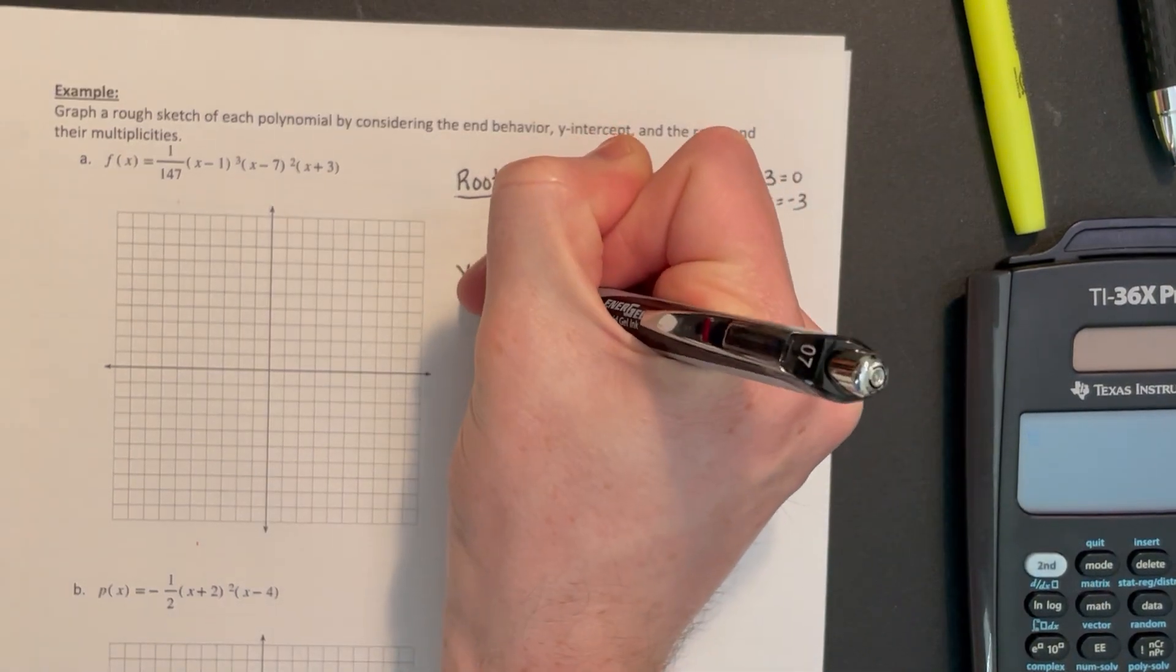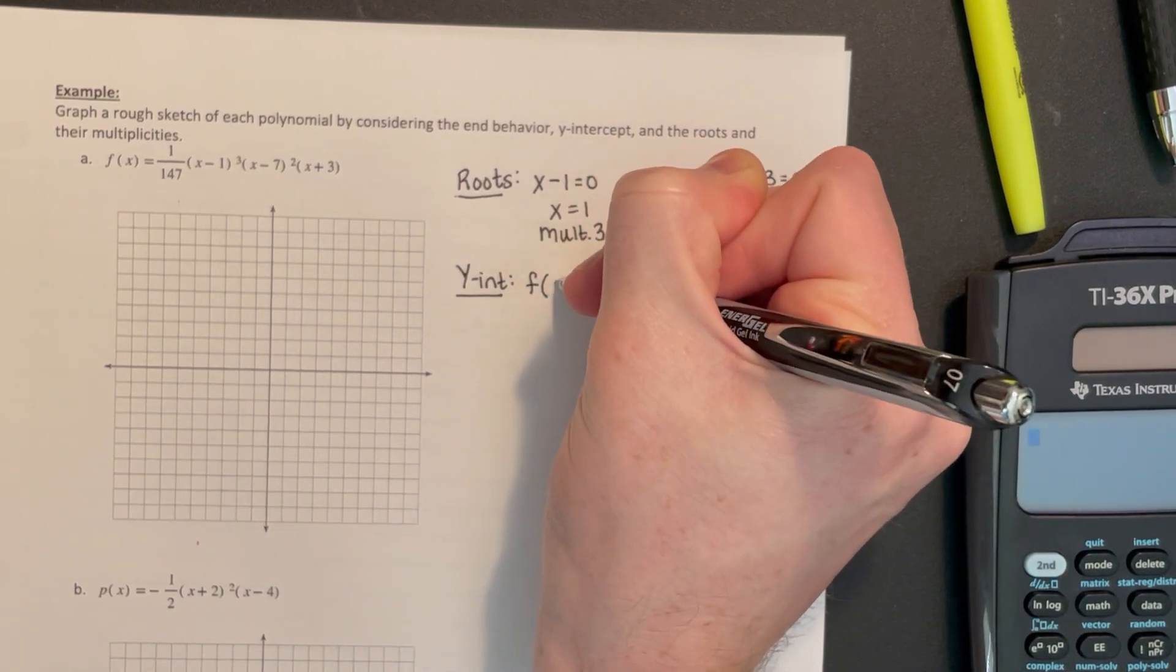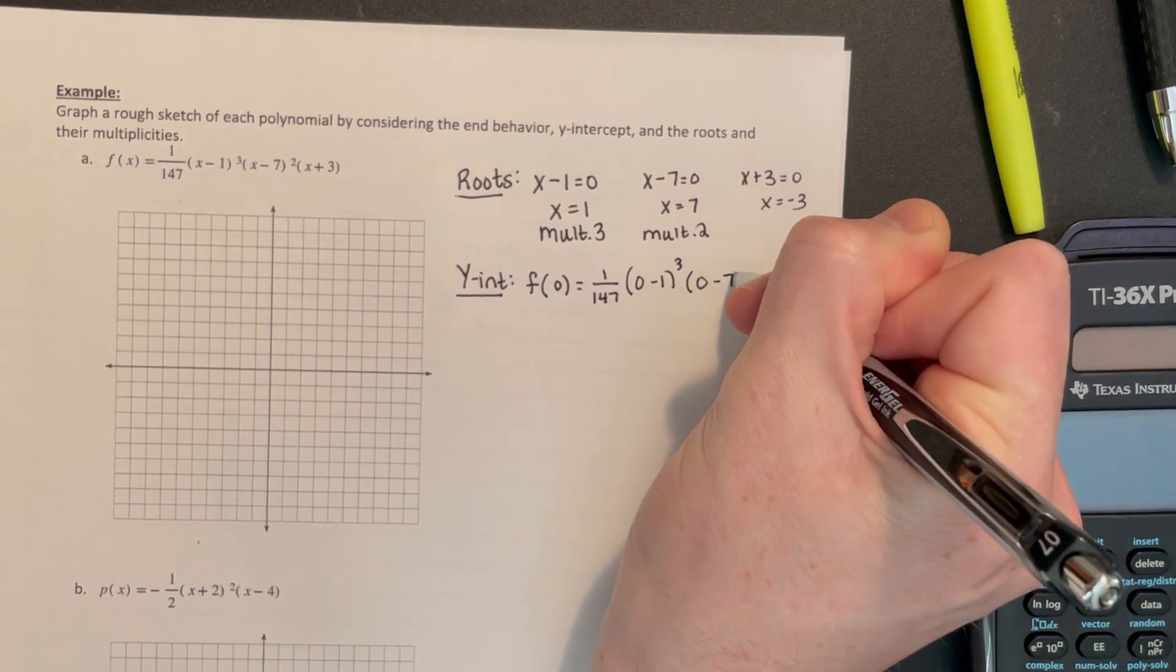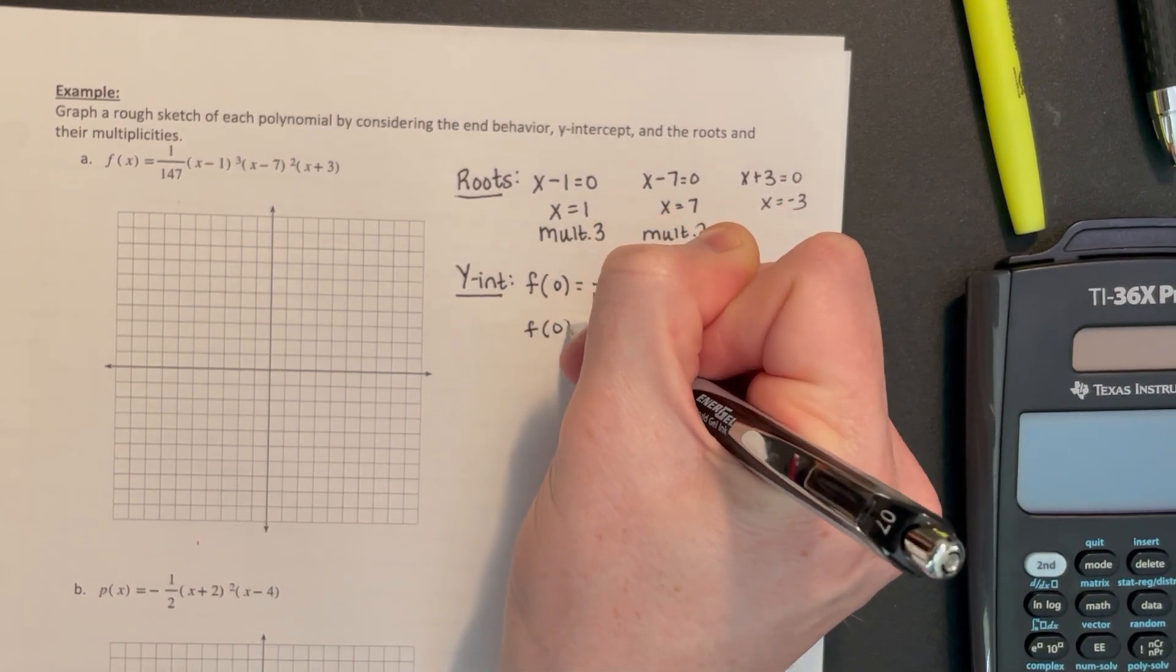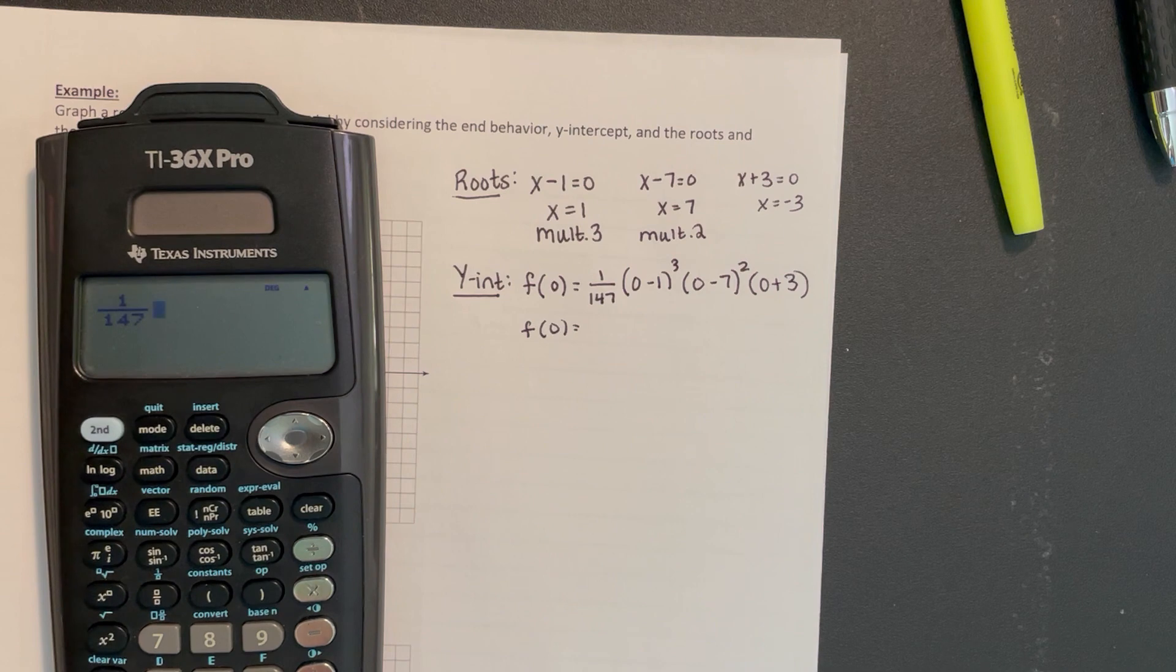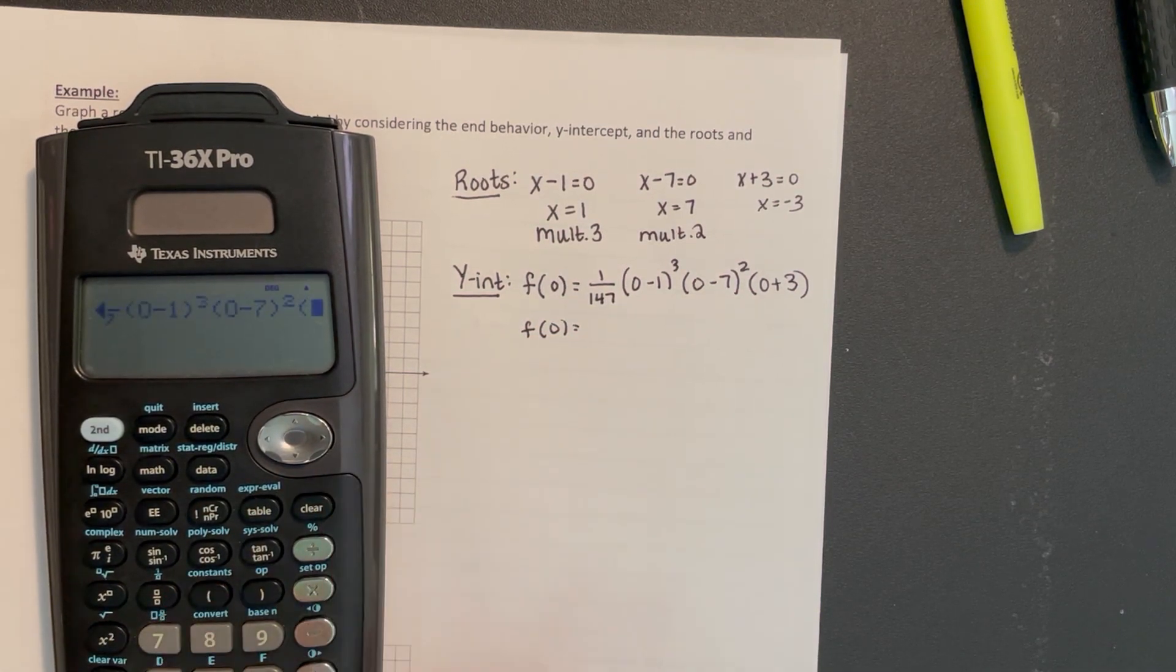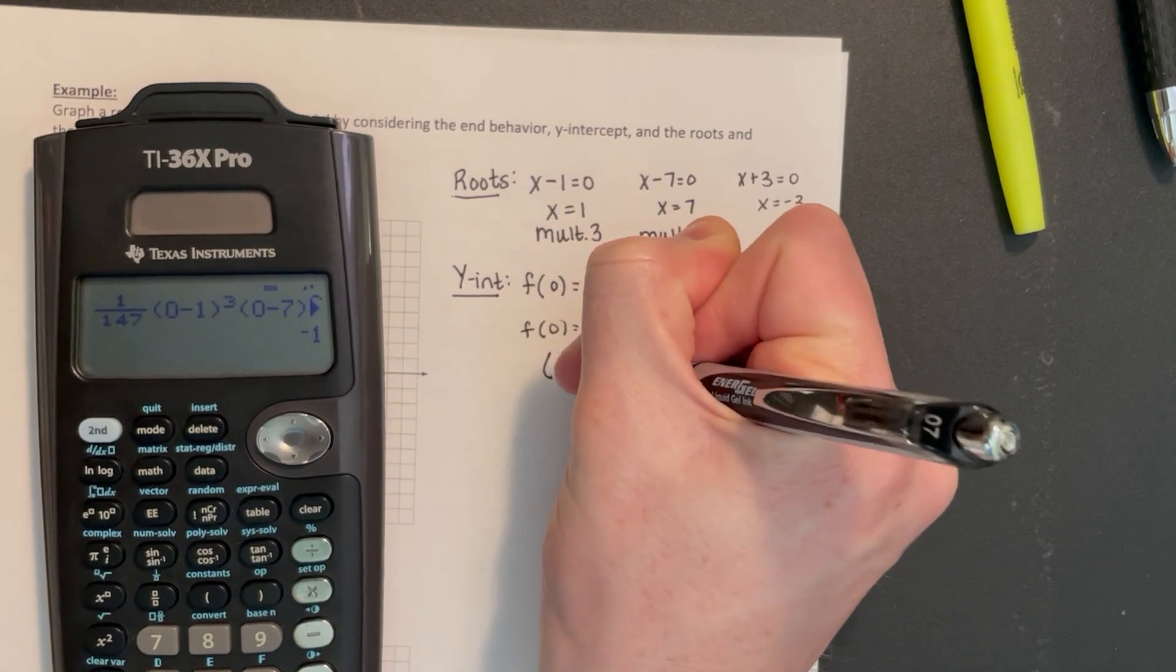We can also think about the y-intercept. The y-intercept is the value of y when x is 0. So if I plug in 0, I can use my calculator to actually calculate this. We've got 1/147 times (0-1)³ times (0-7)² times (0+3). That ends up being -1, which tells me that the y-intercept is (0, -1).